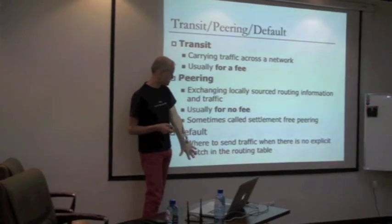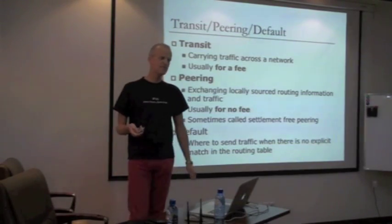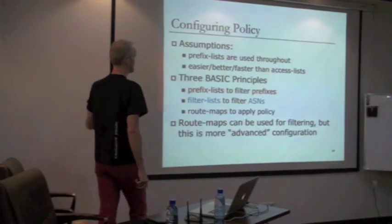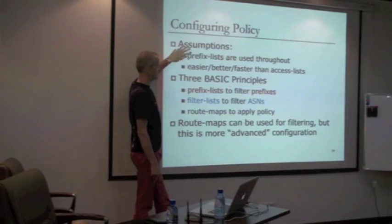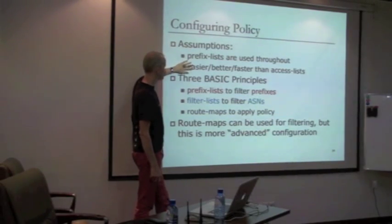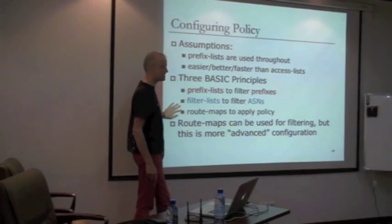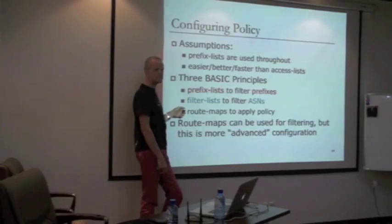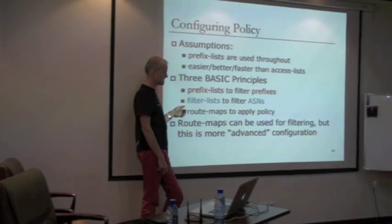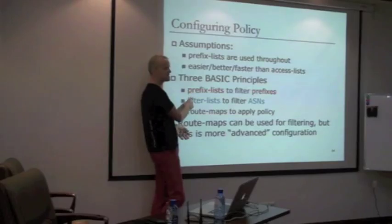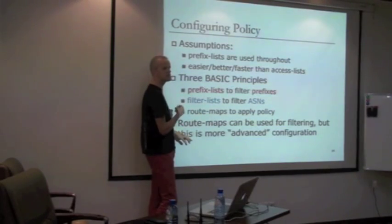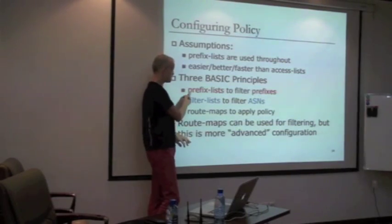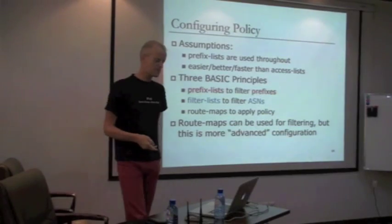Default is where we send traffic where there's no explicit match in the BGP routing table. During the policy, we're going to use prefix lists for filtering prefixes - not access lists for packet filtering. The three basic principles: prefix list to filter prefixes, filter list to filter ASNs, and route maps to apply policy. All the examples I have will be doing these three things. We can use route maps for filtering too, but I consider that a bit more advanced - we'll keep it nice and simple first.